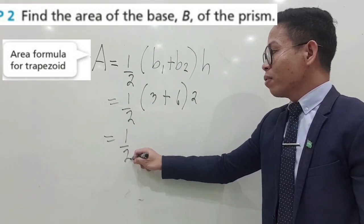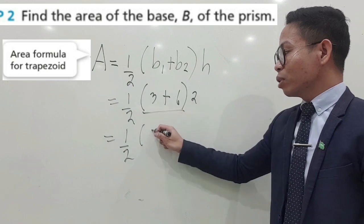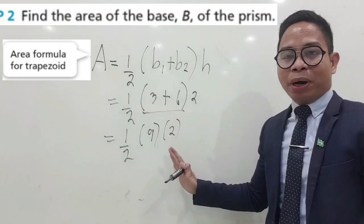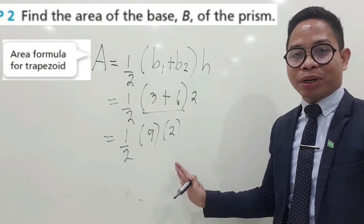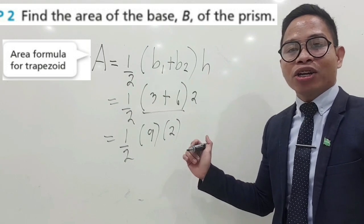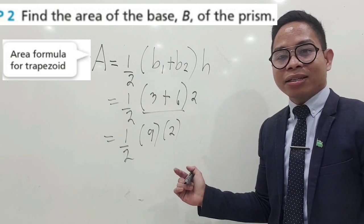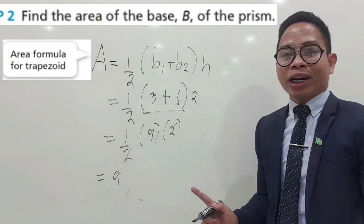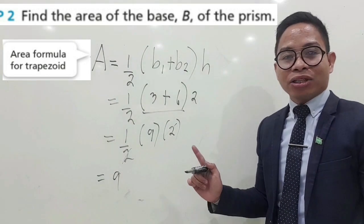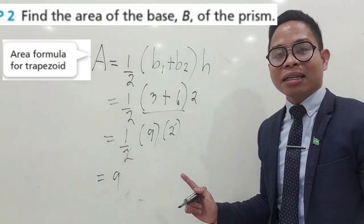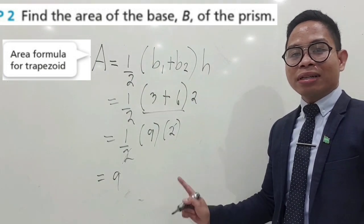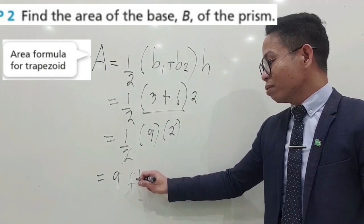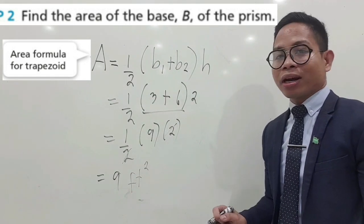Now we will add 3 and 6, and that is equal to 9. In this part, we have different ways in simplifying the expression. We can use the GCF, we can cancel out the GCF 2. What is left is 9. Or we can multiply 9 and 2, that is equal to 18 divided by 2. We will still get 9. But please don't forget to include the unit of measurement in square feet.